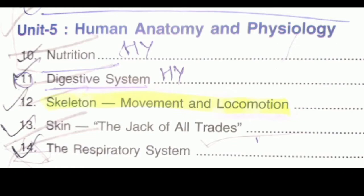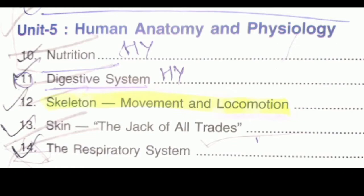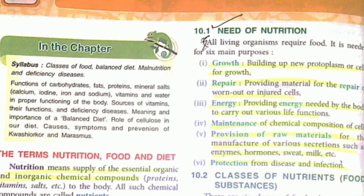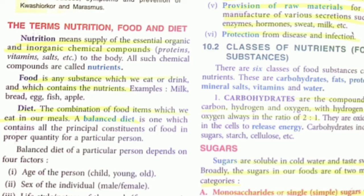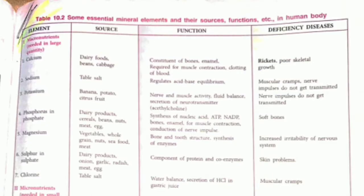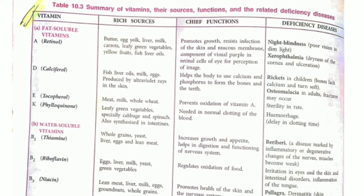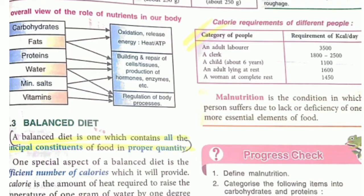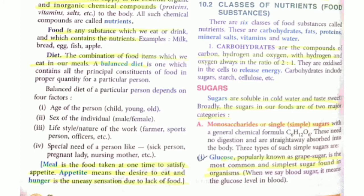Let me tell you in detail, page by page. First, in nutrition: what is nutrition and what is the need of nutrition. Next, you should know the deficiency diseases, particularly this table and this table as well. Also learn the definition of balanced diet and the chart, as these things usually come in exams.